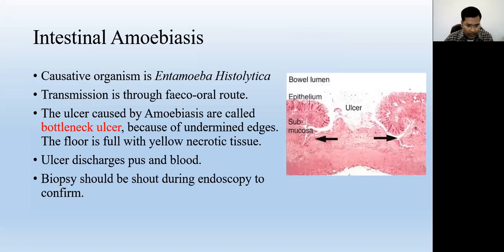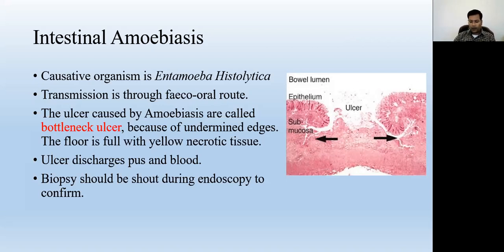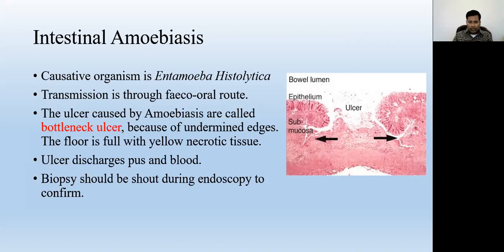Intestinal amoebiasis — the causative organism is Entamoeba histolytica. Transmission occurs when patients ingest the larva or cyst of Entamoeba histolytica through contaminated food or contaminated water. The organism then creates ulcers in the intestine. These ulcers are very deep ulcers, which is why they are also called bottleneck ulcers.